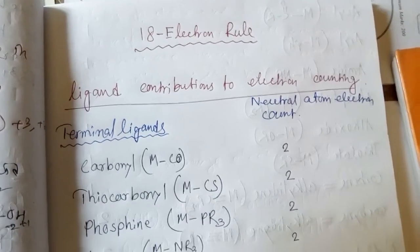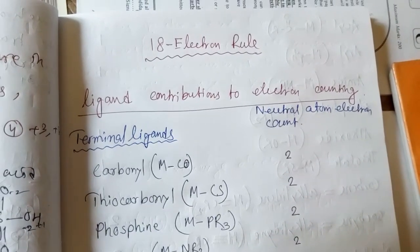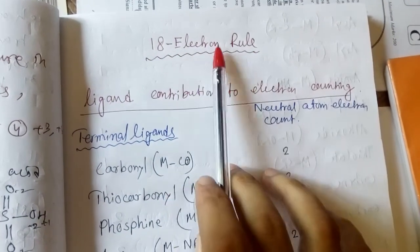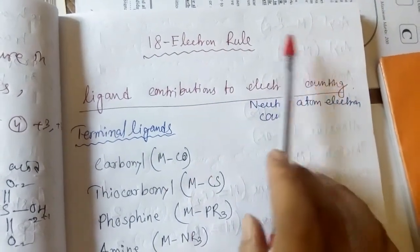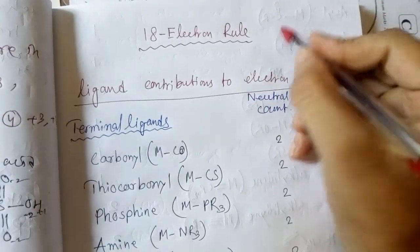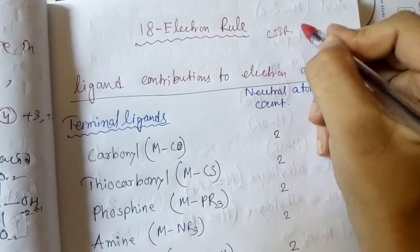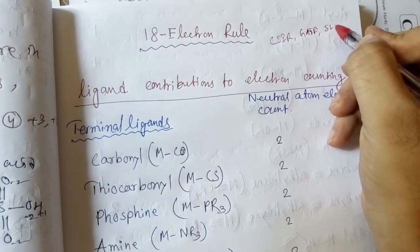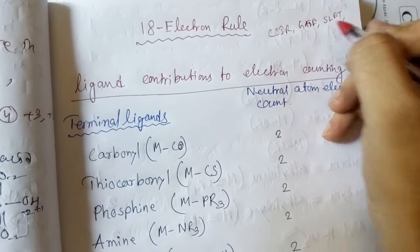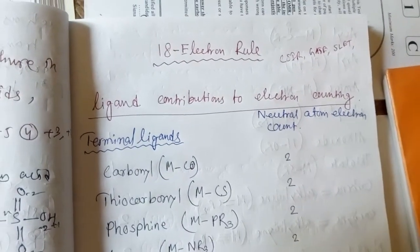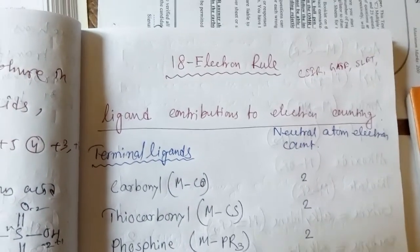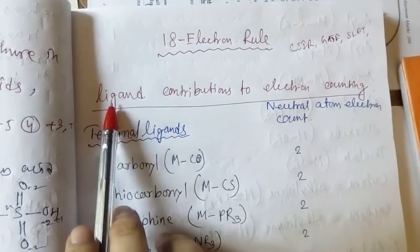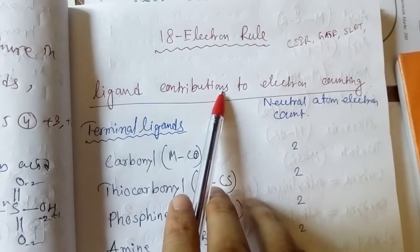Hello everyone, welcome to my channel. Today I will discuss the 18-electron rule. This is very important for CSIR, GATE, SLATE, and also your master's level and BAC levels. Now I will discuss the 18-electron rule and ligand contribution to electron counting.